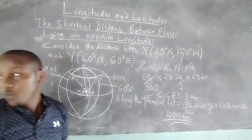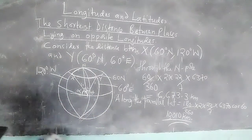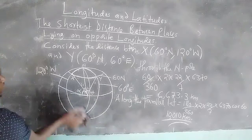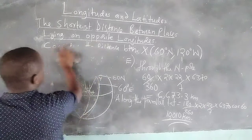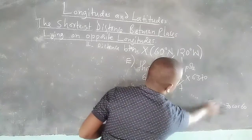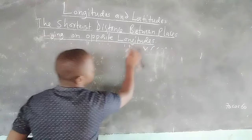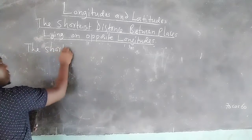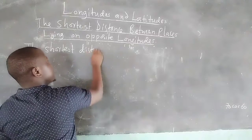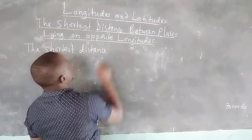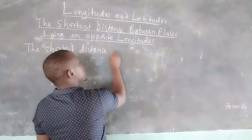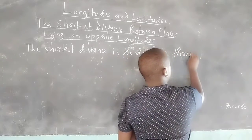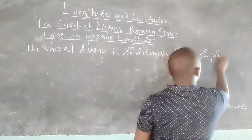This shows us that when we follow the parallel latitude we will get to Y, but the shorter distance between X and Y is when we follow the route along the poles. Therefore, we can conclude that the shortest distance between two places lying on opposite longitudes is the distance through the poles.